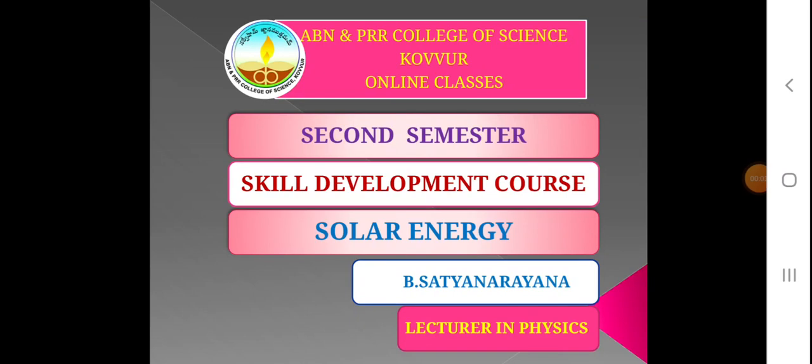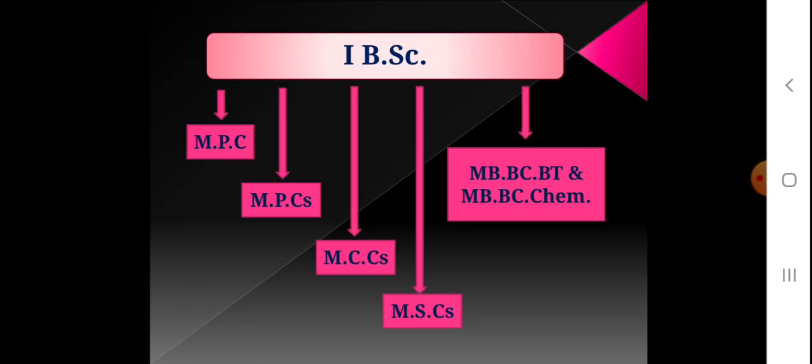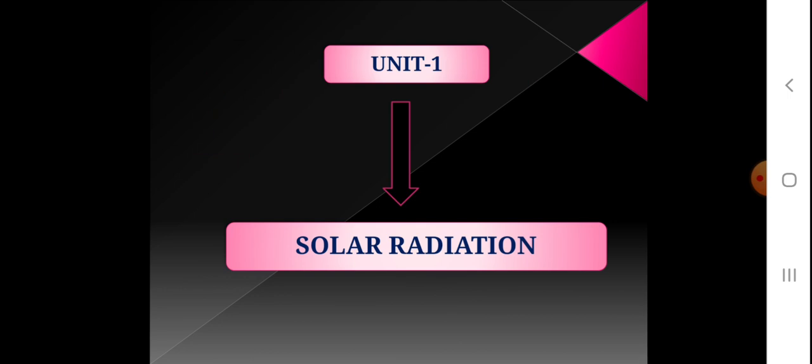Today students, welcome to online classes ABN and PRR College of Science. This is the second semester, one of the skill development courses, solar energy. My name is B. Sajshanana. This is common for all first B.Sc. students. We are still in unit 1, solar radiation. This is lecture number 5.